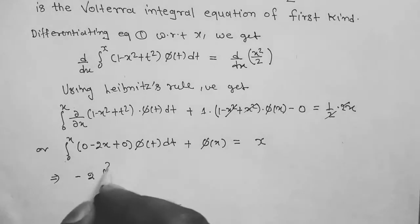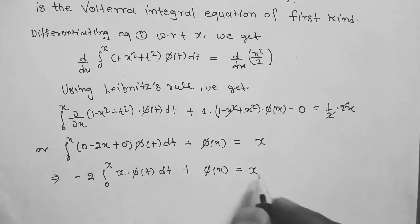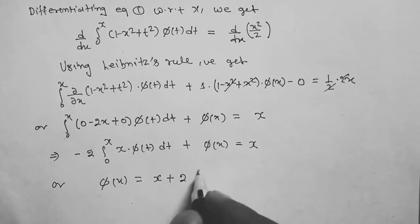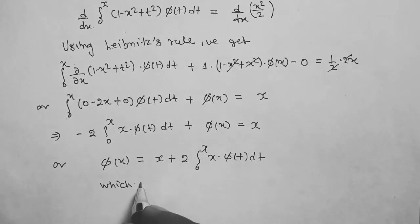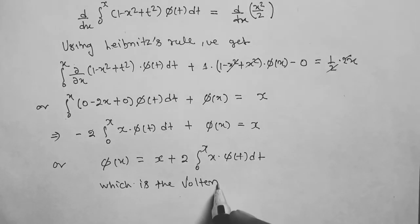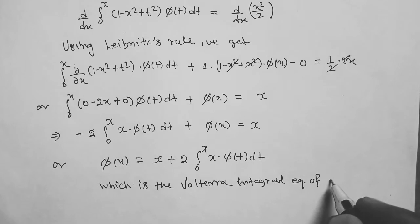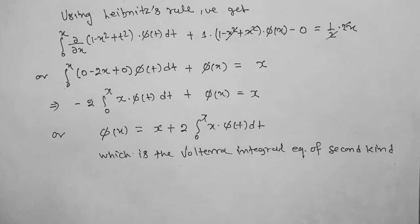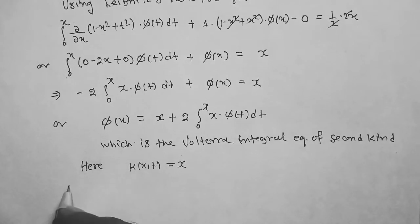This simplifies to: the integral from 0 to x of x·φ(t) dt plus φ(x) equals x, so φ(x) equals x plus 2x times the integral from 0 to x of φ(t) dt, which is the Volterra integral equation of the second kind. We solve it using the iterated kernel method.